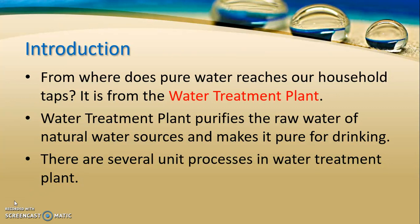Starting with: where does pure water come from? How does it reach your homes? The answer is the Water Treatment Plant. Being a civil engineer, it is not just our responsibility to construct a building — it is our responsibility that the residents living in that building get adequate quantity and quality of water. Water Treatment Plant purifies the raw water of natural water sources and makes it pure for drinking. There are several unit processes in a Water Treatment Plant, and I will go through them one by one.